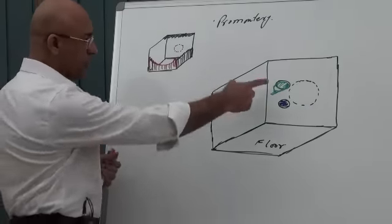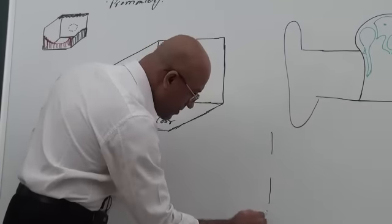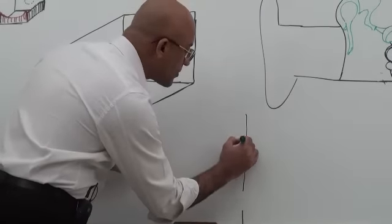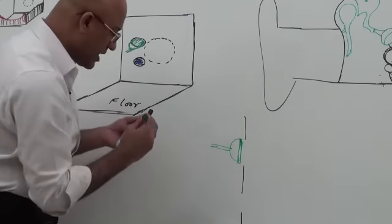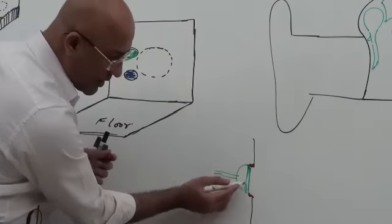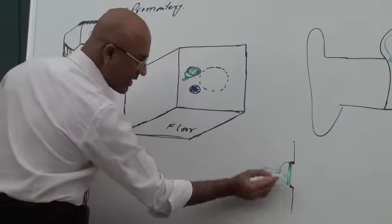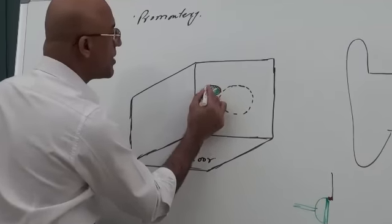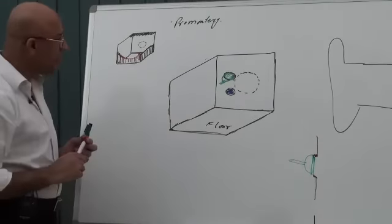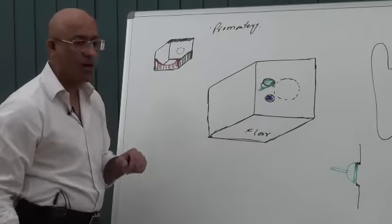I want to tell something about the movement of stapes. If here is the medial wall and here is the footplate of stapes — there is a ligament which holds the footplate of stapes with the window. This ligament is called the annular ligament, because it is like a ring around it. The annular ligament holds the footplate of stapes with the oval window. Most people believe that stapes moves like a piston in and out of the window — that is not true.